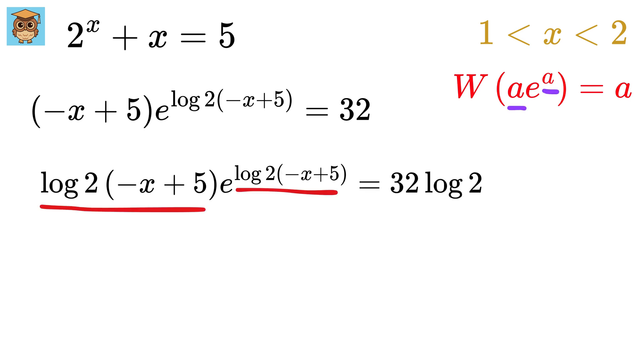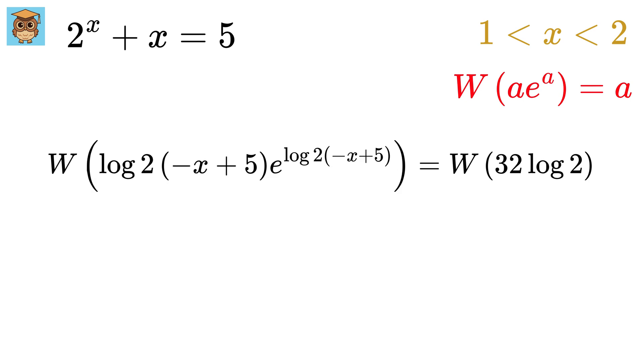Look at this expression. Both of these are the same. So now we can use the W function on both sides to get W of this equals W of 32 log 2. Now don't get scared by this expression. 32 log 2 is a constant. Therefore, W of 32 log 2 is also a constant and nothing else. So now this whole left side will be log 2 times minus x plus 5 equals this.